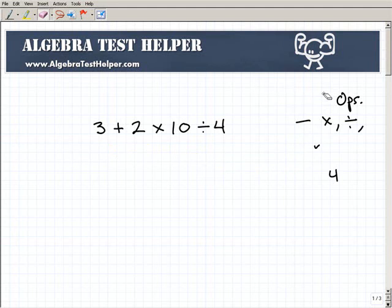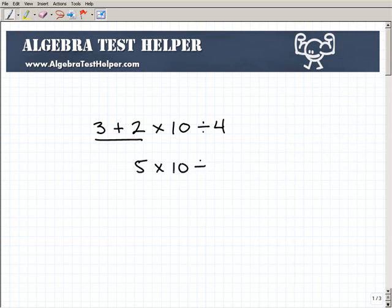Let me give an example real quick, or actually let's use this problem to give us an example of how we can get this wrong. Let's say I didn't know the order of operations and I went, all right, let's see here, 3 plus 2 is 5. So I have 5 times 10 divided by 4.